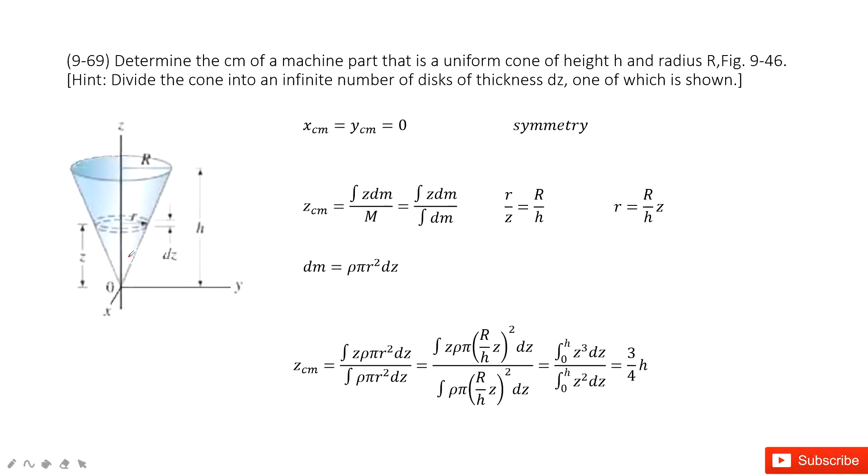First of all, we can see for symmetry, the center of mass for x component and y component is zero. So the only thing we need to find is the center of mass at z component, right?